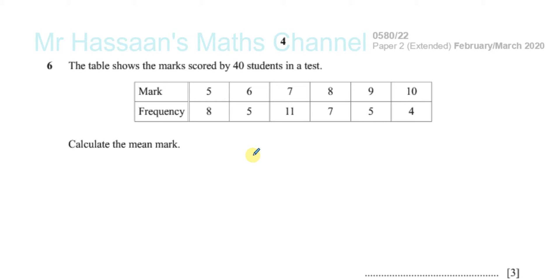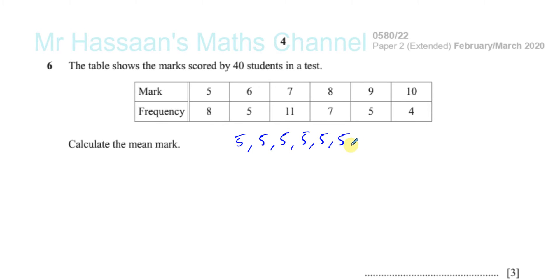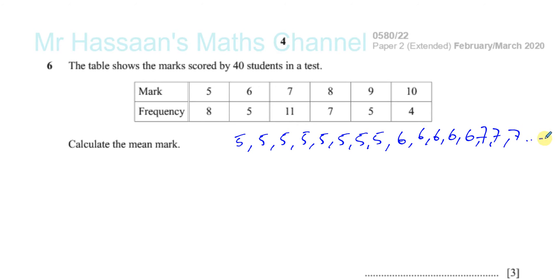What I'm going to show you is I'm going to start writing down what this data would look like before it was put into a frequency table. For example, you would have found in the data that the number five occurred eight times — you'd have a five eight times. The number six occurred five times — you'd have a six five times. And then you'd have the number seven occurring eleven times. I think you've got the idea now.